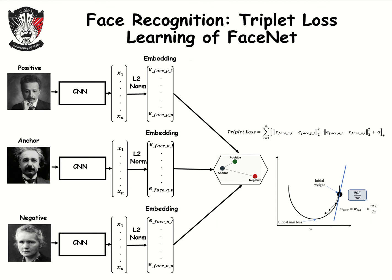In this video I'm going to explain the training process used during the construction of FaceNet. FaceNet directly learns a mapping from faces to a compact vector called a face embedding. During the training process, CNN parameters including the weights and biases will be updated in order to get the minimum triplet loss.